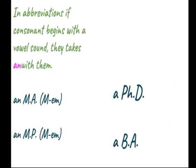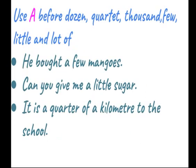In abbreviations, if a consonant letter begins with a vowel sound, it takes an. For example: an MA, an MP — for M, our pronunciation is E-M, so we use an before it. A PhD, a BA. We also use a before dozen, quarter, thousand, few, little and lot of. For example: he bought a few mangoes. Can you give me a little sugar? It is a quarter of a kilometer to the school.